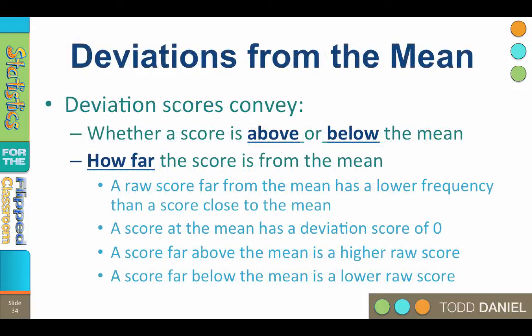Deviation scores convey two things. One, whether the score is above or below the mean. And two, how far the score is from the mean.